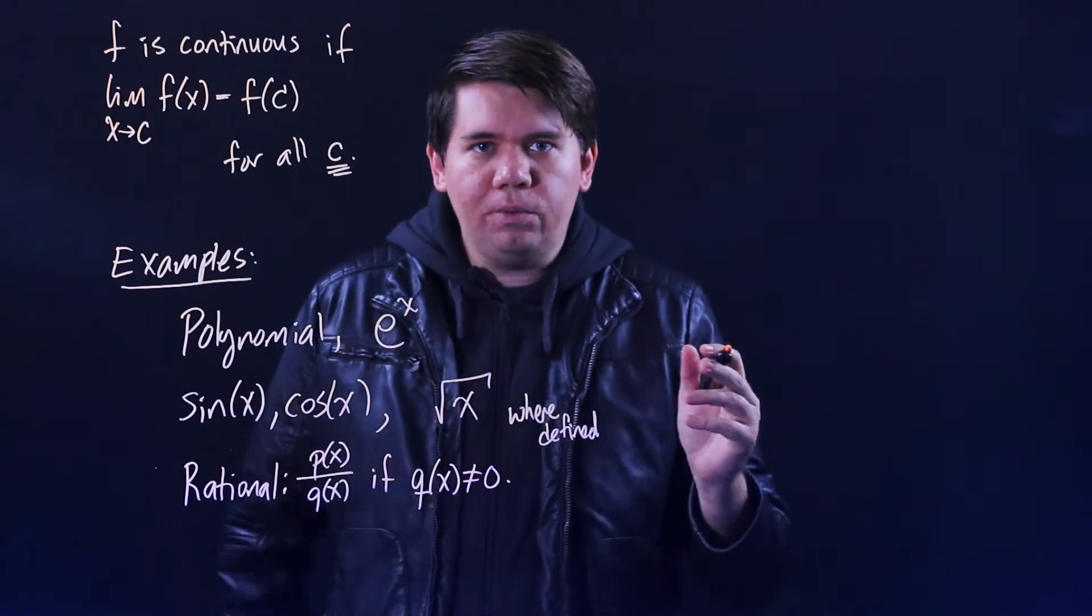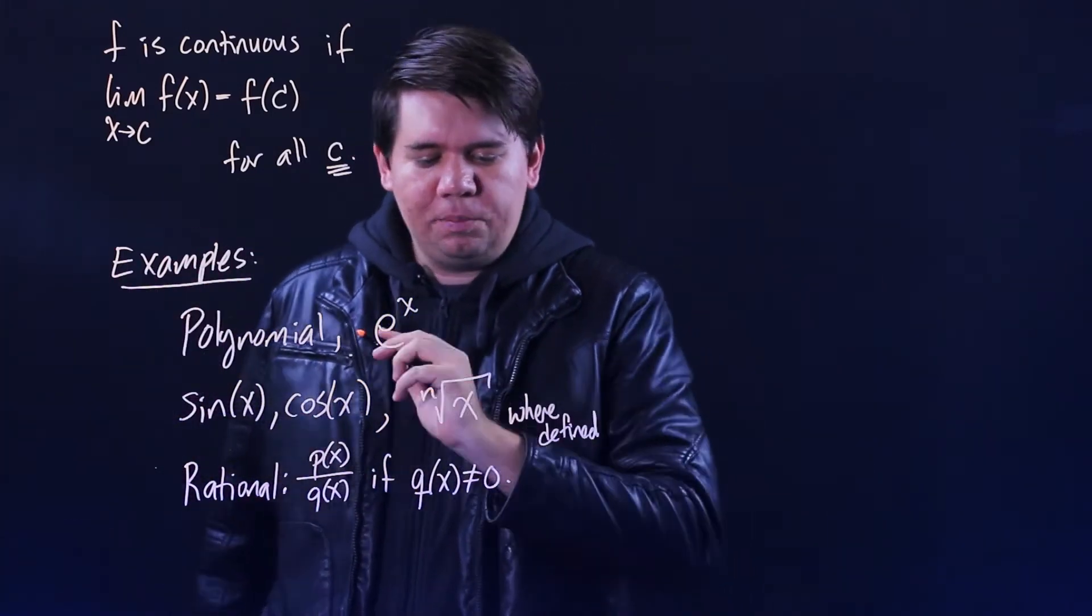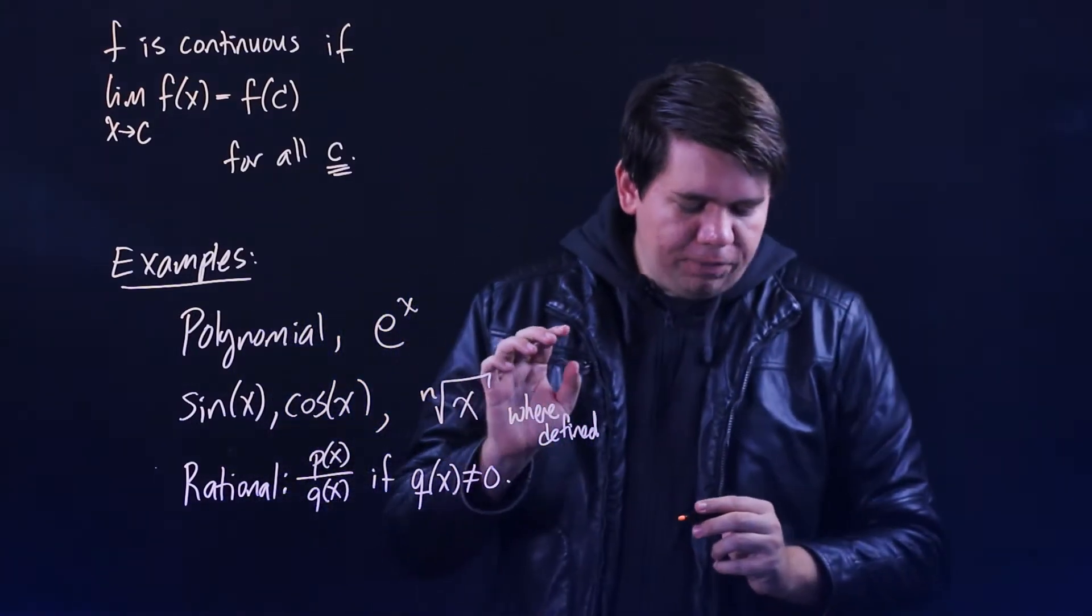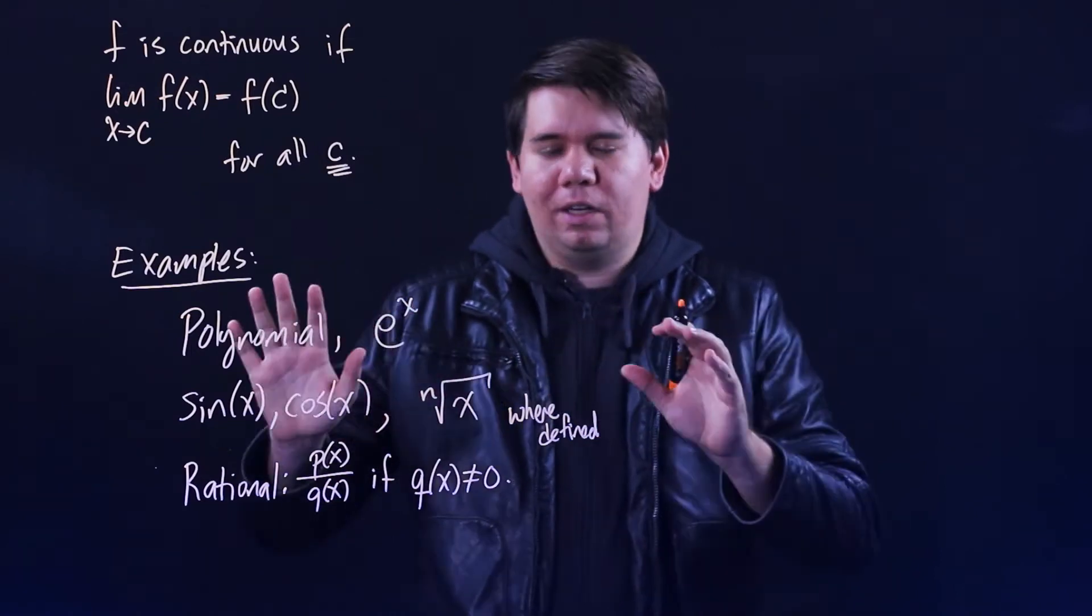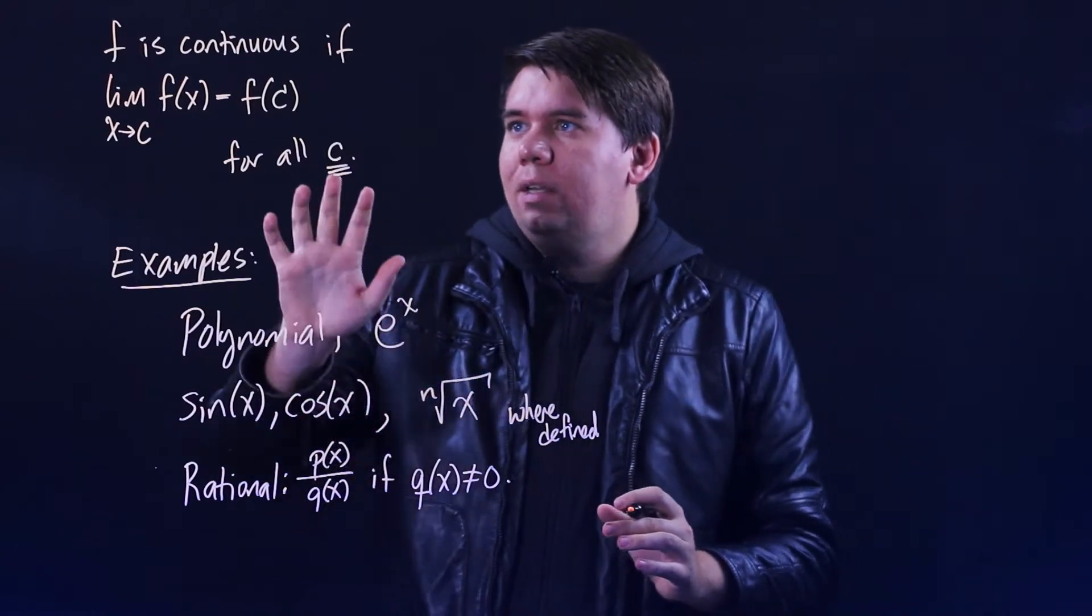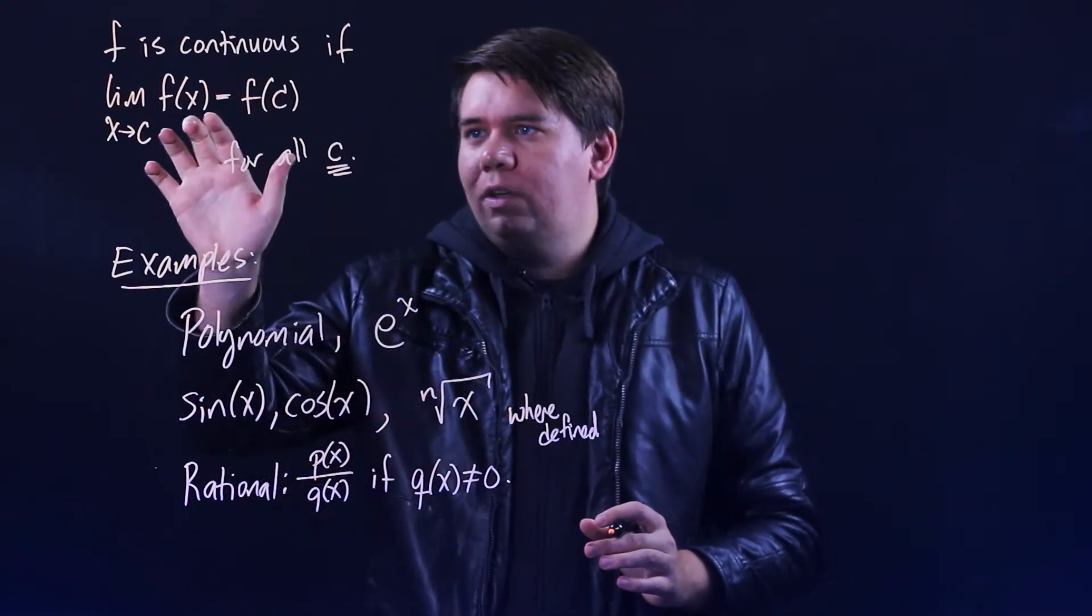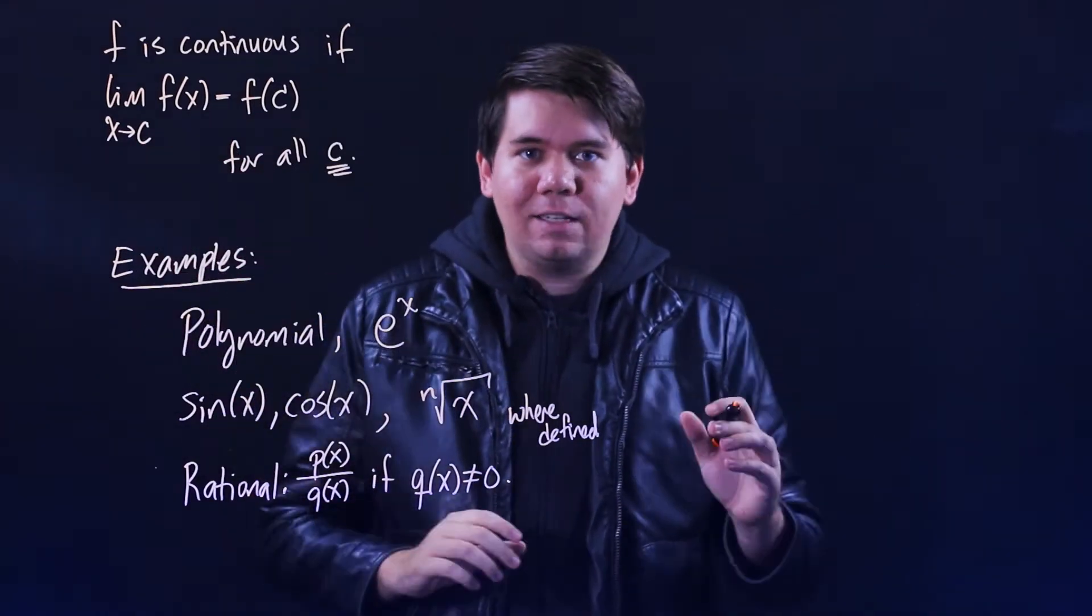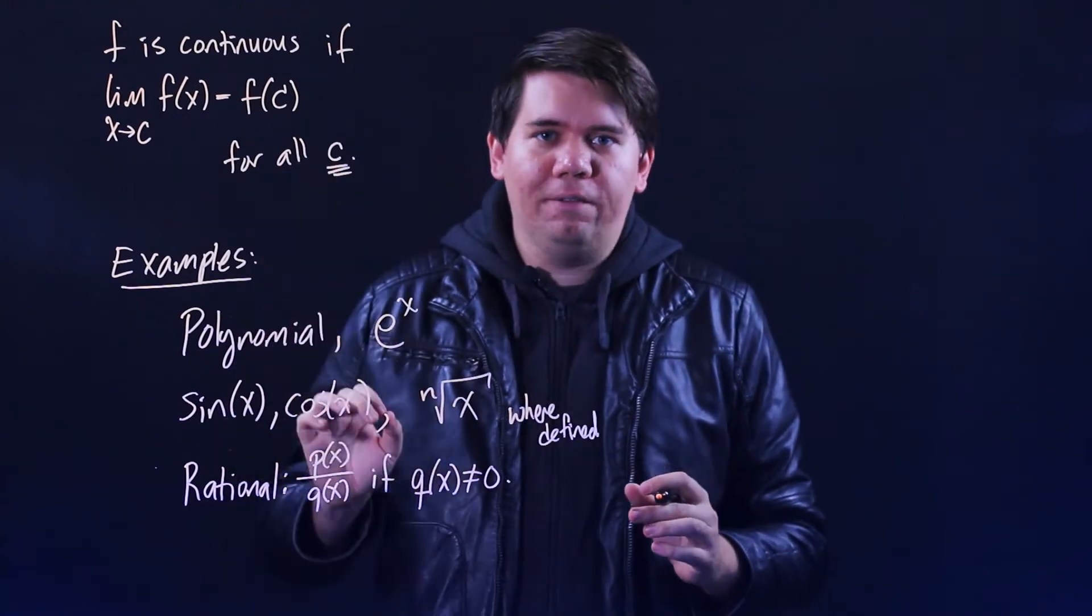Similarly, for cube root, well that would be defined everywhere, or fourth root, or fifth root, and so on. So I'll put nth roots wherever they're defined. So there are quite a few examples of various kinds of examples of functions that are continuous everywhere. And those are really nice because it says if you want to take some limit of one of these kinds of functions, the limit is just going to come out to be what you get by plugging c in. The limit as x goes to 5 of e to the x is just e to the 5, for example.